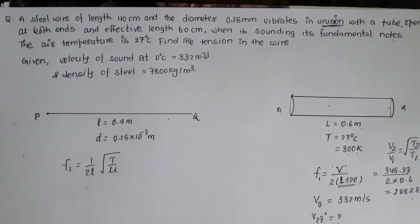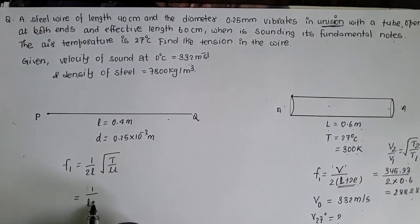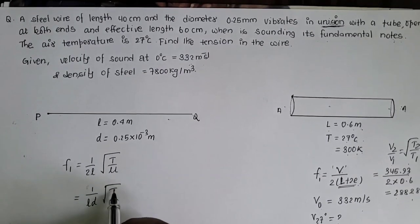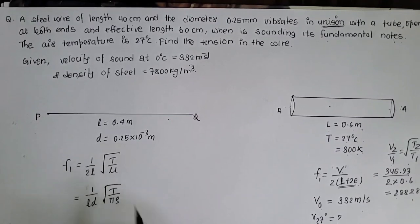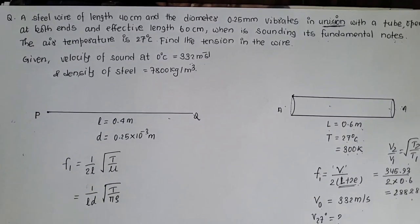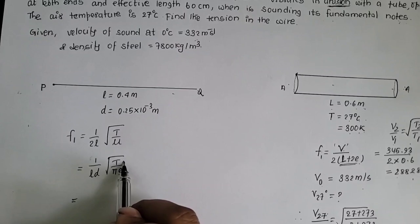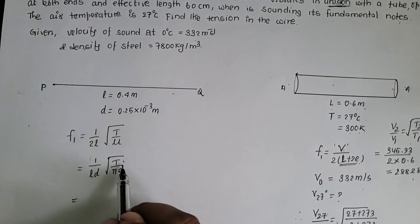Yah equation laye diameter ko forma convert gari vane isla lekna sakson 1 by LD root over T by pi into rho. Isko conversion definitely dimaale padishaye gosha.